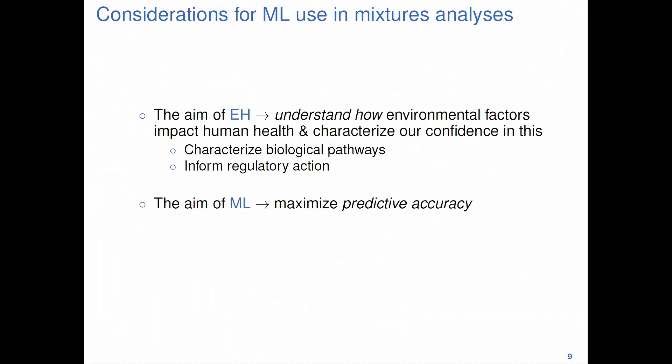Before applying a machine learning method, we should keep in mind that the environmental health field has a different aim from the machine learning field. In environmental health, we are mostly interested in understanding how environmental factors impact human health and characterizing how confident we are in this understanding. Machine learning, on the other hand, aims to maximize predictive accuracy. This matters because some machine learning methods do not provide standard errors or uncertainty estimates, and other methods do not provide betas that assume linearity.